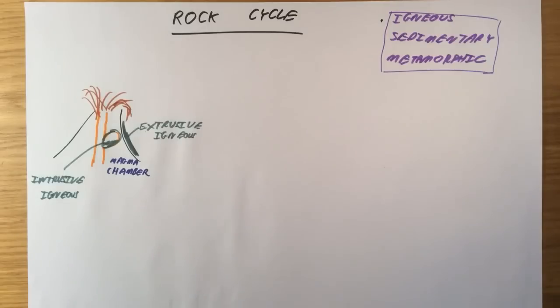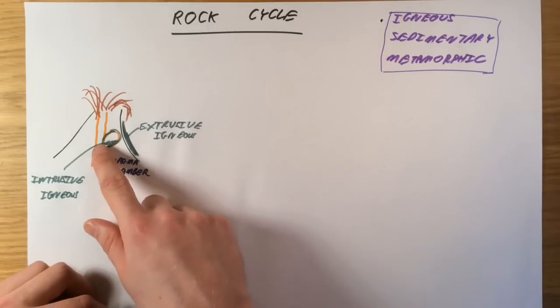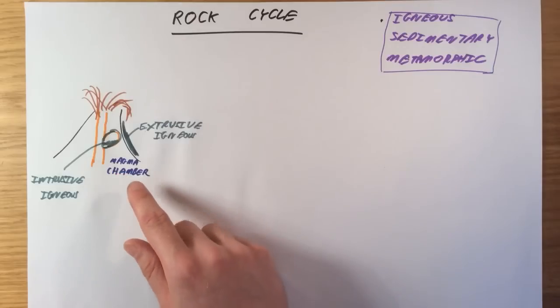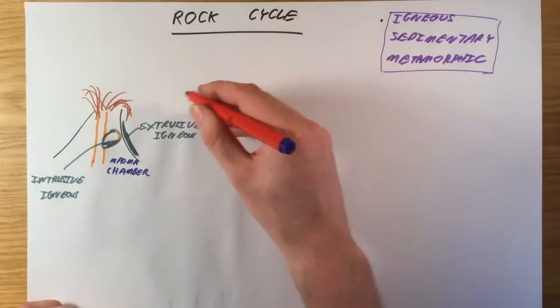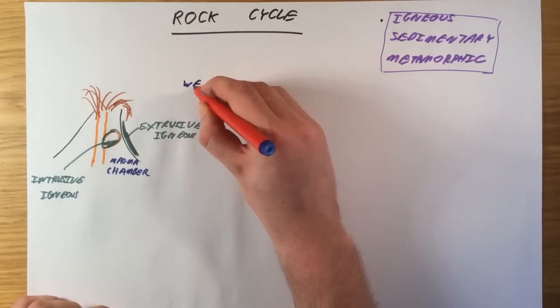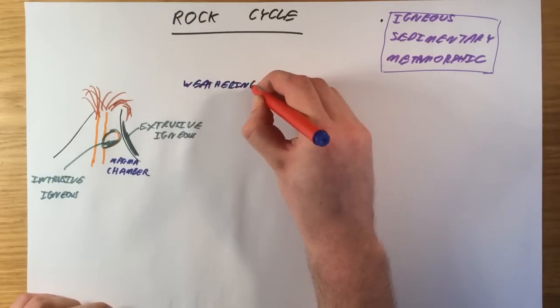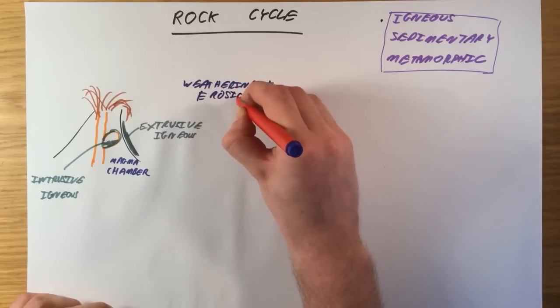We're going to talk about the differences between those in a second, but now we need to know what happens next. So, either the rock that's already on the surface or the rock that's inside the volcano in magma chambers that can get brought up to the surface will eventually be weathered and eroded. So, there are two key words for this stage here, weathering, which means breaking the rock down into smaller pieces, and erosion, which means that the rock is transported.